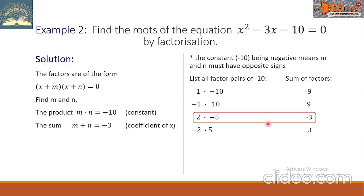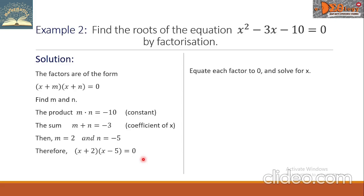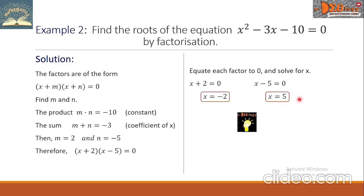The value -3 points to the factor pair 2 and -5, so m = 2 and n = -5. Substituting, we get (x + 2)(x - 5) = 0. Equating each factor to zero: from x + 2 = 0 we get x = -2, and from x - 5 = 0 we get x = 5. These are the roots of the quadratic equation. Substituting back into the original equation confirms both are correct.